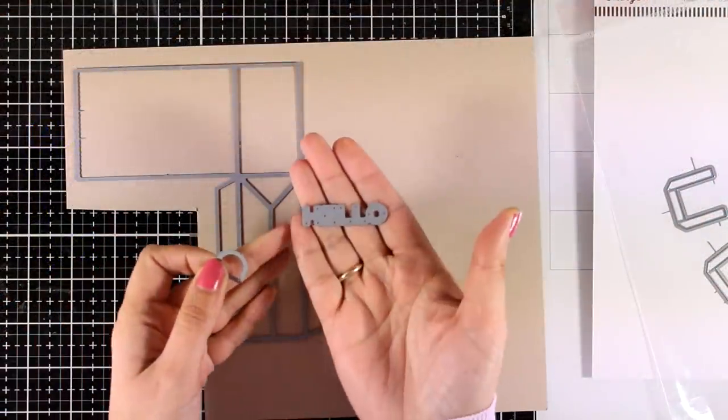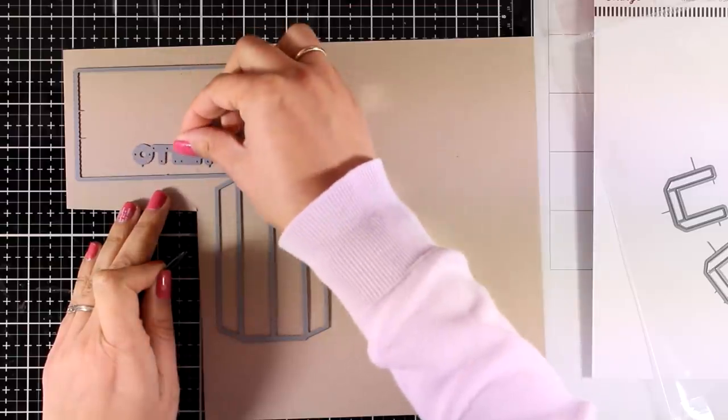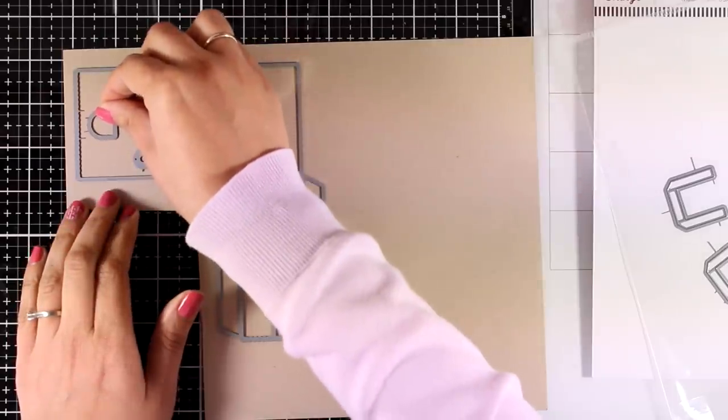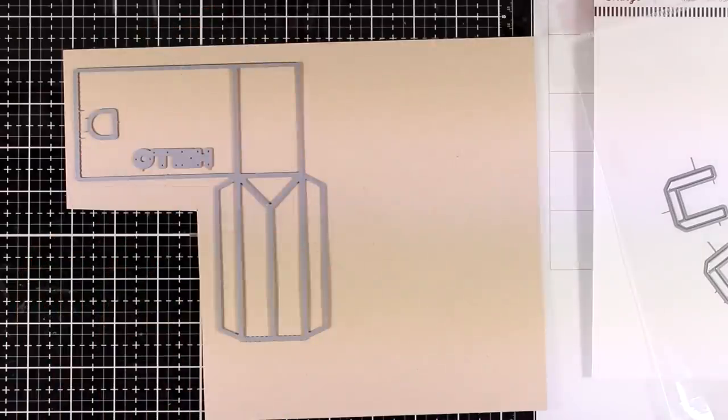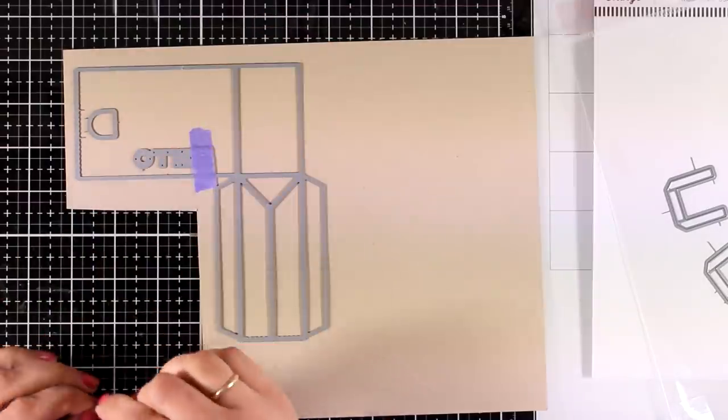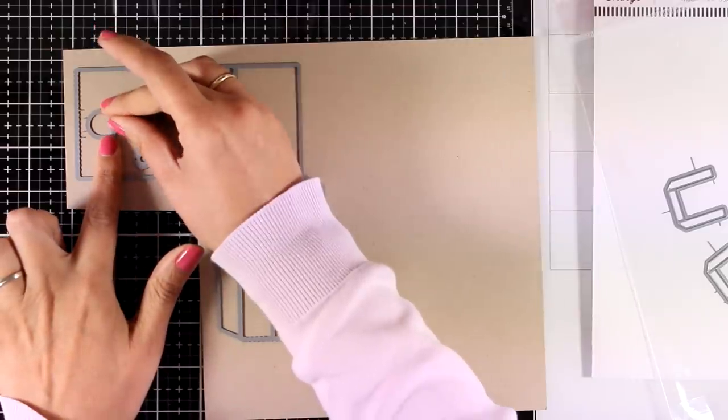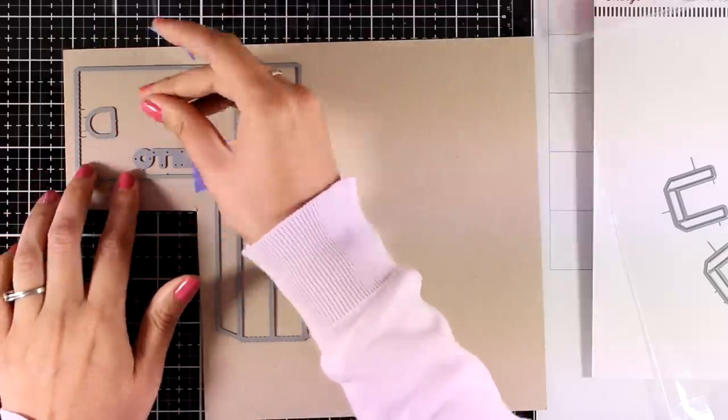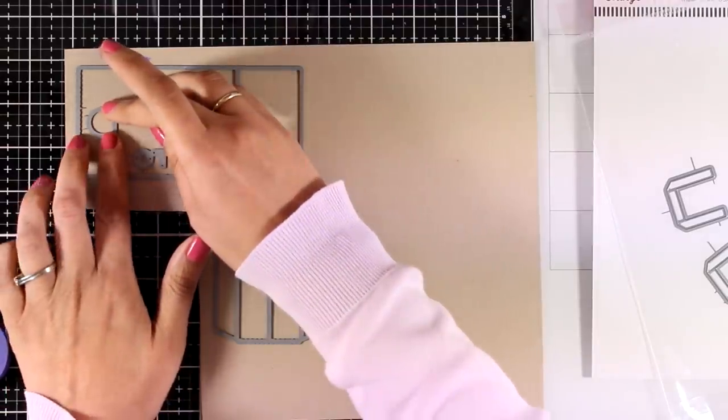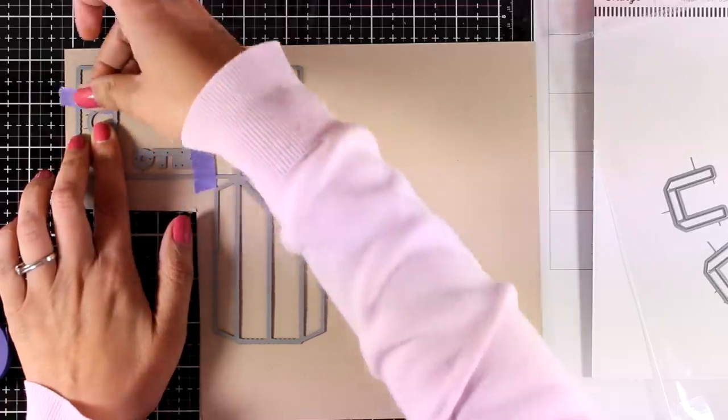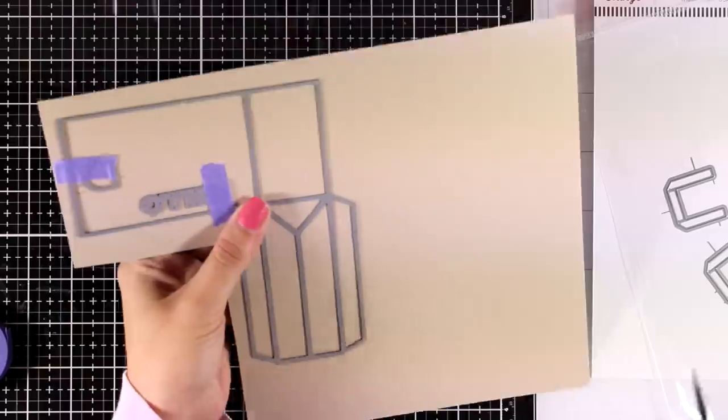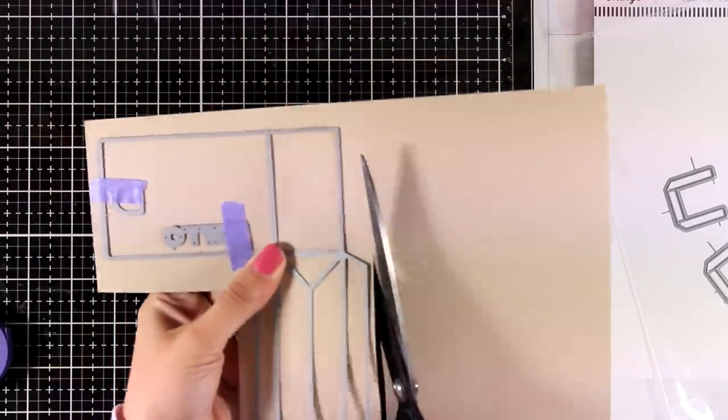I'm going to cut out this treat bag using a craft cardstock. I'm laying on top the little handle as well as the sentiment that says hello from the captions die set and I will secure them together with some purple tape. Make sure to use some tape to keep those three dies together so that you can remove them from the paper and put them on another one and cut out more and more multiples without having to place those two little dies inside again and again. So you can cut out as many panels as you need with the hello.